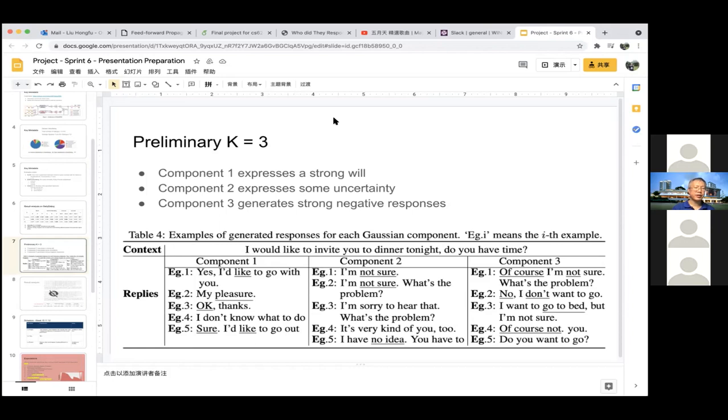As for the second hypothesis, what we want to verify is we want to interpret K. This is the result from the original paper. When they said K is equal to three, they selected some examples. This dialogue is generated by component one, this dialogue generated by component two. Their interpretation is that if you look at component one, you can see they express a strong will when they generate response, but for component two, maybe the dialogue is more like I'm not sure, I have no idea, so it's some kind of uncertainty here. Therefore component three, then there are some negative responses like no, I don't, of course not. So we plan to do the same thing for K is equal to five, K is equal to 10.